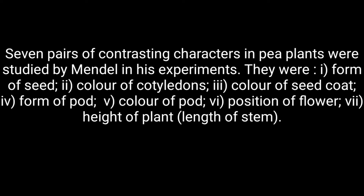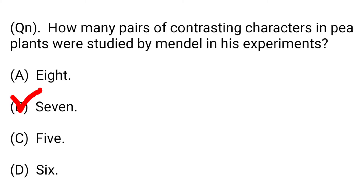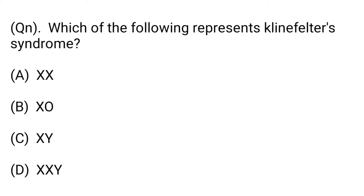The seven characters were: 1) form of seed, 2) color of cotyledons, 3) color of seed coat, 4) form of pod, 5) color of pod, 6) position of flower, and 7) height of the plant. Hence, option B, seven, is the right answer.